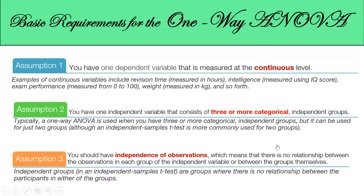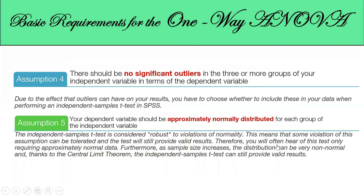Assumption number three: you should have independence of observation, meaning there is no relationship between observations in each independent variable or between them. Fourth, there should be no significant outliers in the groups of your independent variables in terms of the dependent variable. And of course, your dependent variable should be approximately normally distributed for each group of the independent variables. Given that all assumptions are passed, let's proceed with the one-way ANOVA.